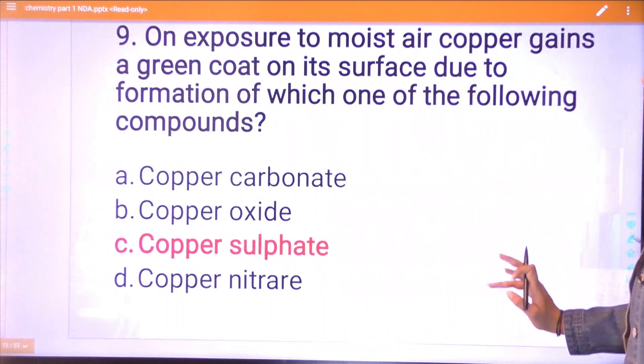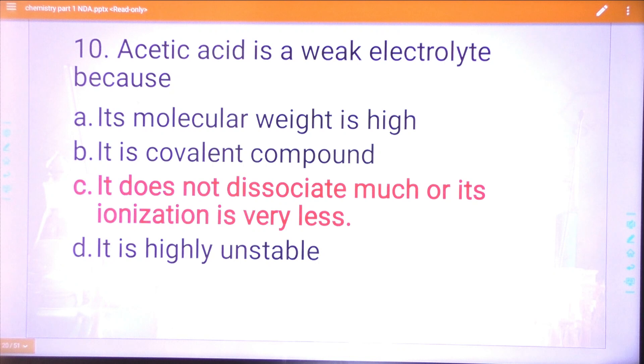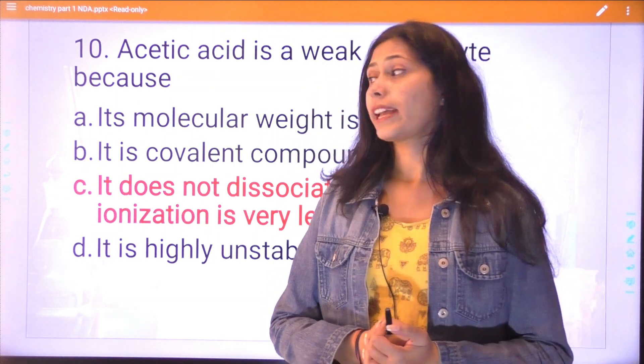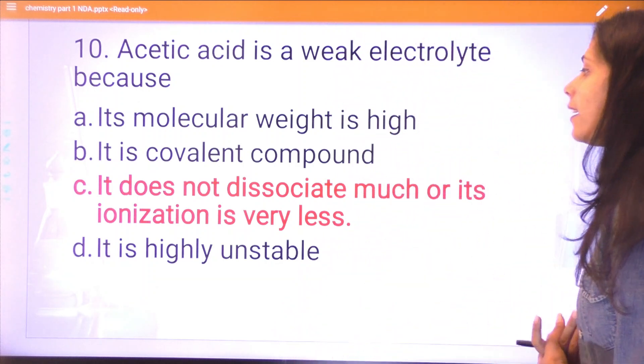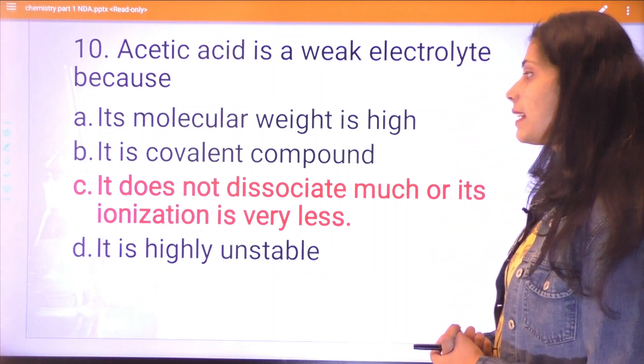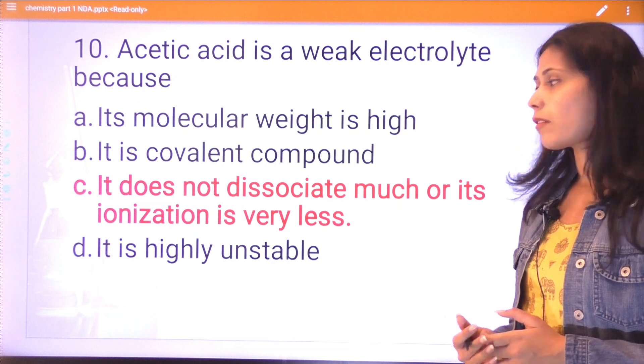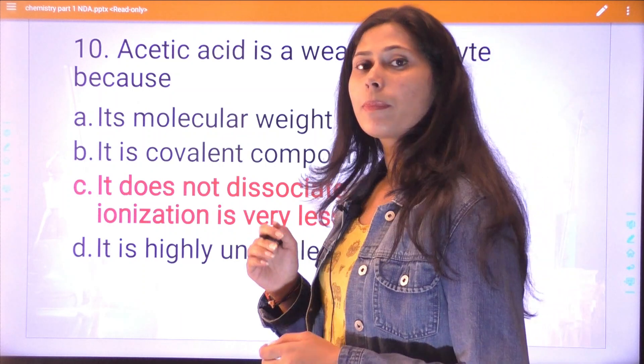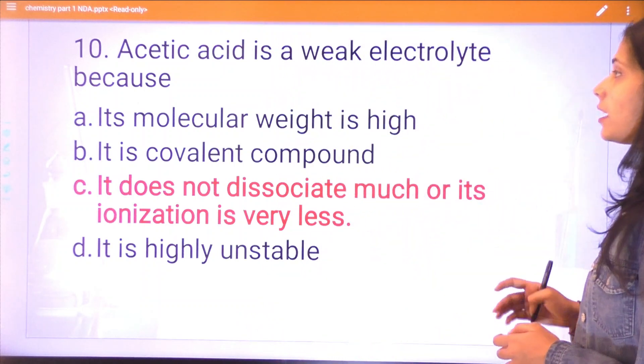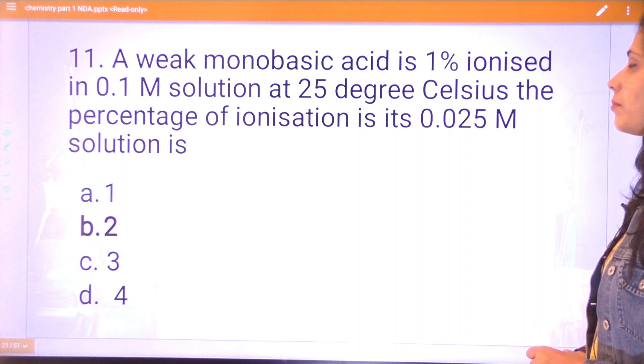Question ten: acetic acid is a weak electrolyte because it is a weak electrolyte. The correct answer is it does not dissociate much, or its ionization is very less. Because its ionization energy is very less and it does not dissociate, that is the reason acetic acid is a weak electrolyte.